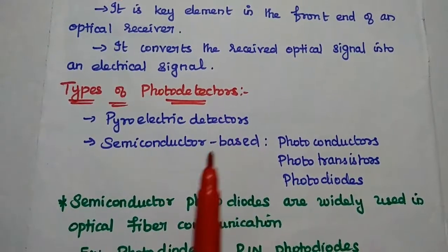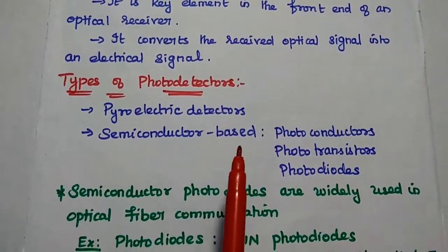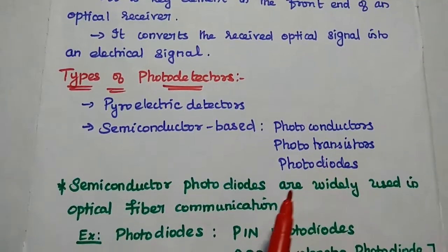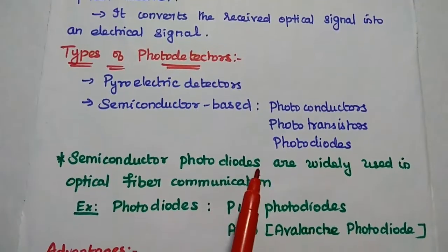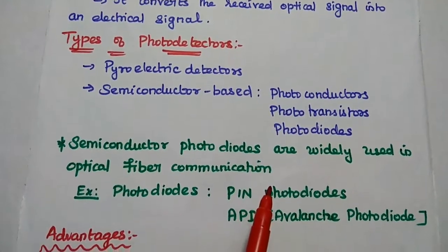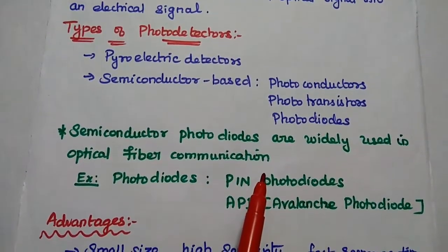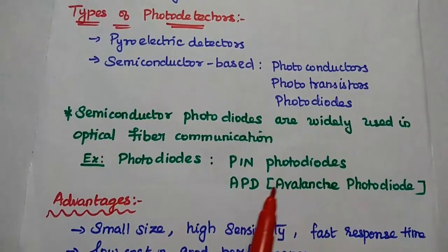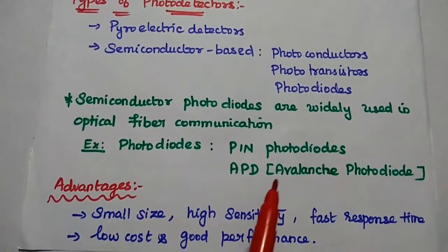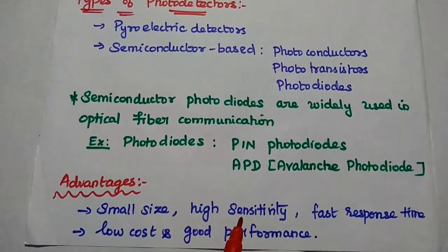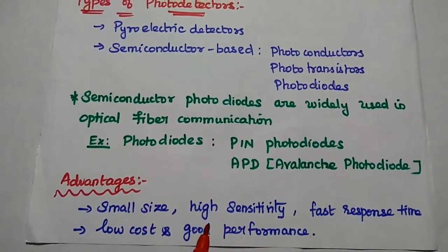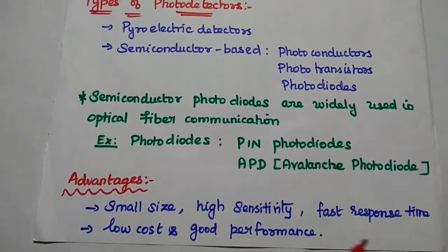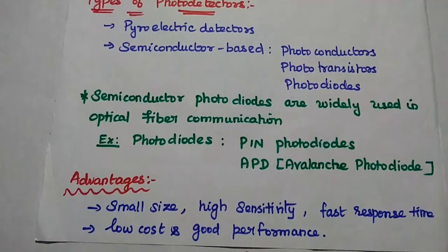There are different types of photodetectors available: pyroelectric detector, semiconductor-based photodetectors like photoconductors, phototransistors and photodiodes. Here the semiconductor photodiodes are widely used in optical fiber communication system. Examples are PIN photodiodes and avalanche photodiodes. The major advantages of photodiodes are: small size, high sensitivity, fast response time, low cost, and good performance.